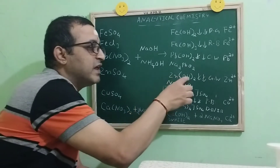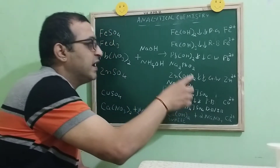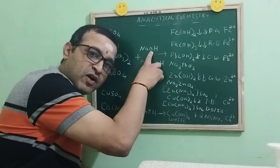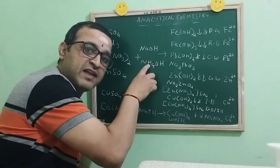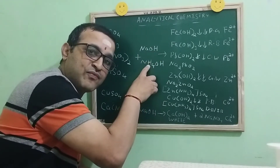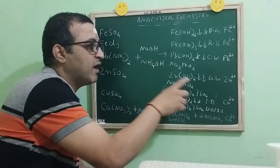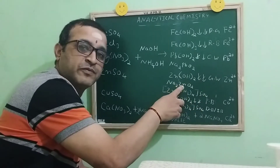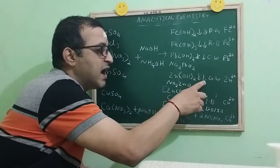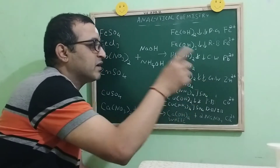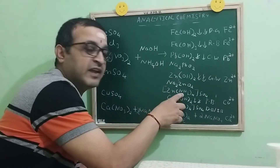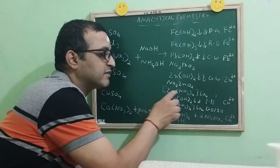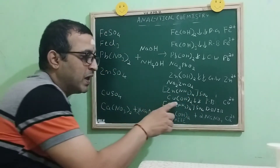When it comes to Zn(OH)2, it is soluble in excess of sodium hydroxide as well as excess of ammonium hydroxide. With sodium hydroxide excess, it forms sodium zincate, and with ammonium hydroxide excess, it forms a complex salt tetraamine zinc sulfate.